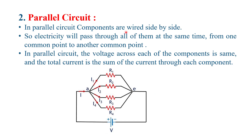In a parallel circuit, components are wired side by side. Here we see in the diagram four resistors R1, R2, R3, and R4 all connected in parallel with a voltage source or battery. In a parallel circuit, electricity passes through all of them at the same time from one common point to another. The voltage across all components is the same because they are all wired side by side.